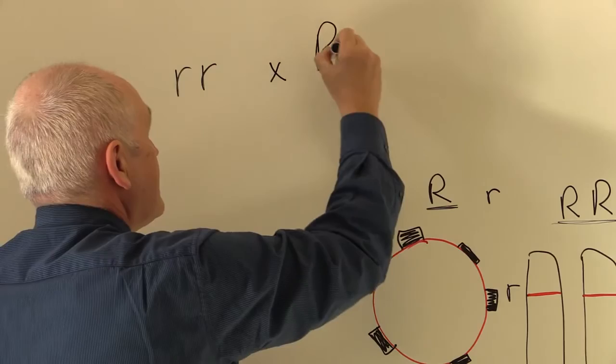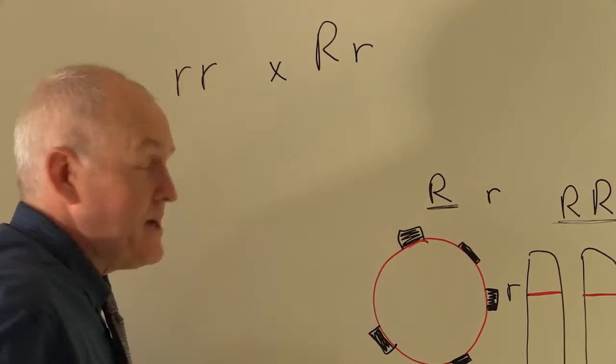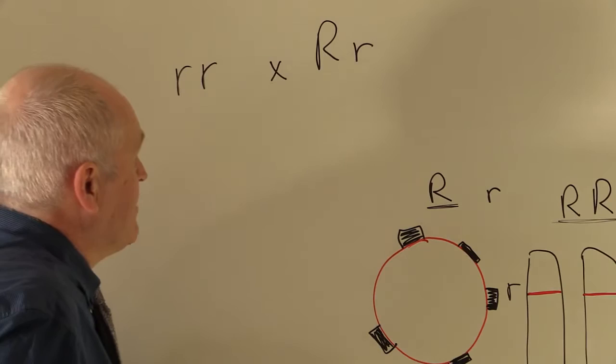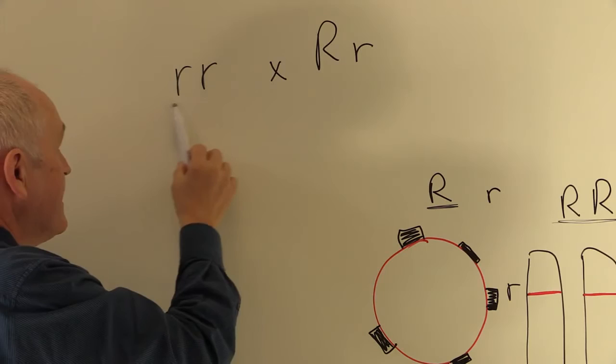And the father could be one large R and one small r. He could be carrying one copy of the Rhesus gene and the other position on the other homologous chromosome could be the recessive gene. In other words, this father is heterozygous for the trait, whereas the mother is clearly homozygous recessive.